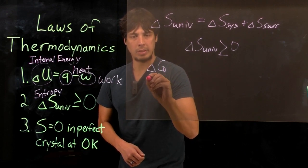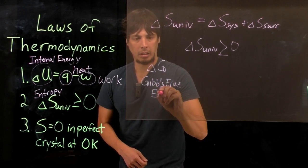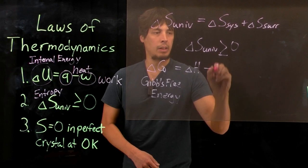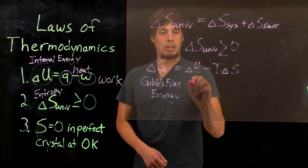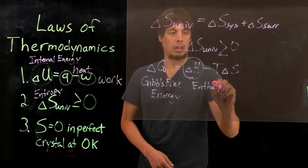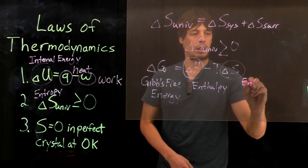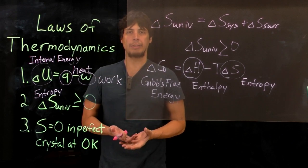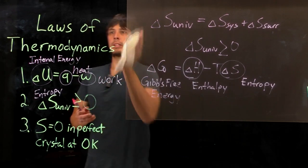where delta G is called Gibbs free energy. And that is equal to delta H minus T delta S, where H is called enthalpy. And delta S, of course, as we already mentioned, is entropy. And so we can use this equation to predict if a reaction is possible. So before we start working on whether these reactions are possible or not, let's define some terms.